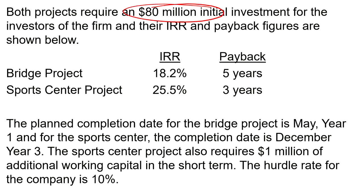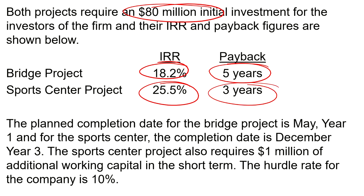Both projects require an $80 million initial investment. Their IRR and payback figures are shown below: the bridge project has an 18.2% IRR and a payback of five years; the sports center project has 25.5% IRR and a payback of three years. The planned completion date for the bridge project is May Year 1, and for the sports center it's December Year 3. The sports center project also requires one million dollars of additional working capital in the short term, and the hurdle rate for the company is 10%.